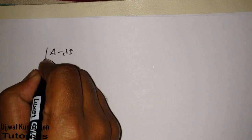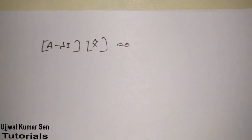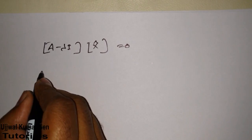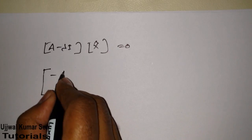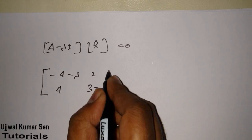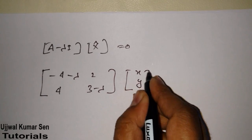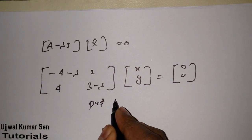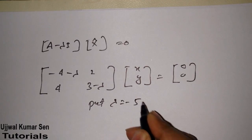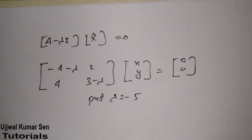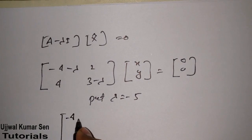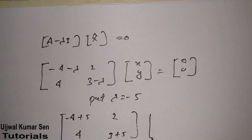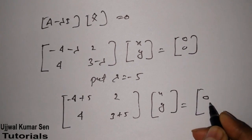To find out eigenvectors, I have to write the equation (A minus lambda I) times vector x equals zero matrix. So we have the matrix with entries (minus 4 minus lambda), 2, 4, (3 minus lambda) multiplied by vector [x, y] equal to [0, 0]. Now put one of the eigenvalues — let's put lambda equals minus 5.